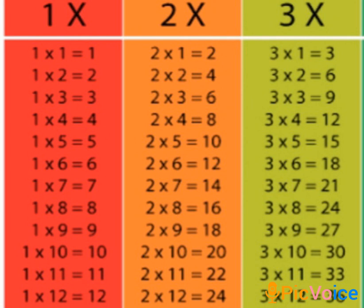2 1s are 2, 2 4s are 8, 2 5s are 10, 2 6s are 12, 2 7s are 14, 2 8s are 16, 2 9s are 18, 2 10s are 20, 2 11s are 22, 2 12s are 24.